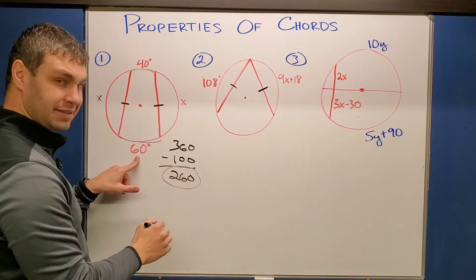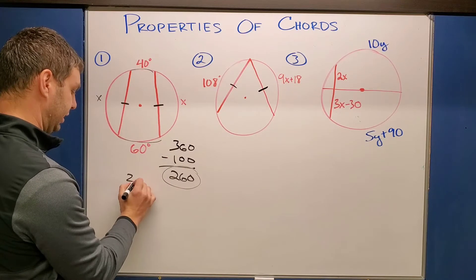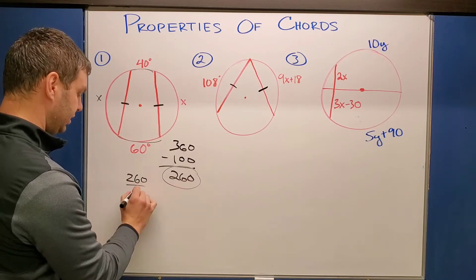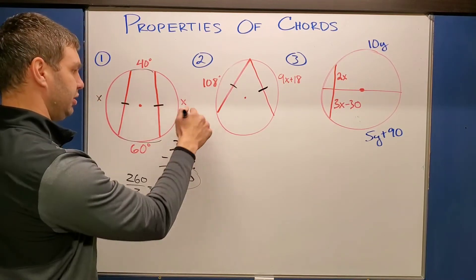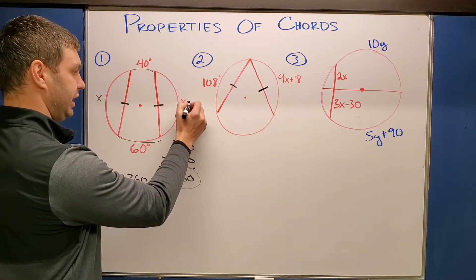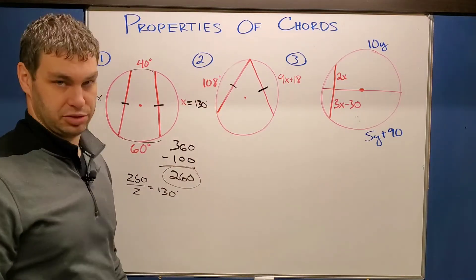So really, the only math I need to do is 260 divided by 2, which of course is 130 degrees. And then for the original X that I was looking for, I can say X equals 130 degrees, just like that.